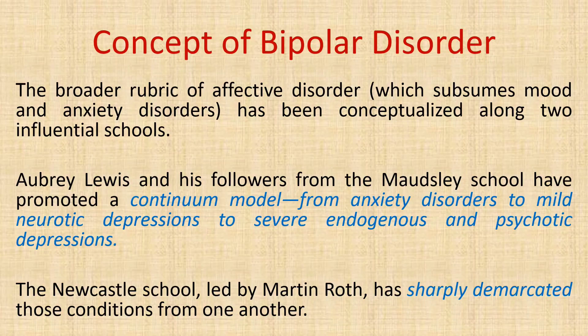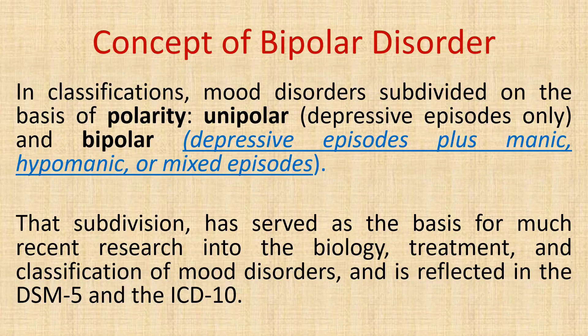Previously, various schools of thought followed the continual model of bipolar disorder, ranging from anxiety to severe depression or episodes of mania, while another school sharply demarcated anxiety, mood disorders, and other disorders. In classifications like DSM-V and ICD-10, it is subdivided on the basis of polarity into unipolar and bipolar disorder. In unipolar disorder there are depressive episodes only, while in bipolar disorder there are depressive episodes along with episodes of mania and hypomania. At least one episode of mania or hypomania must be present to diagnose bipolar disorder.